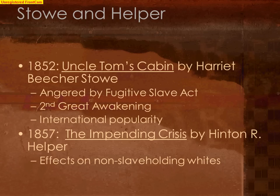Her main character, Uncle Tom, is almost this Jesus-like figure in her book, and he was eventually murdered by the evil white overseer, Simon Legree. Harriet Beecher Stowe never actually met any slaves — she was from the North. But her book gained international popularity and it really brought a human face to the issue of slavery.